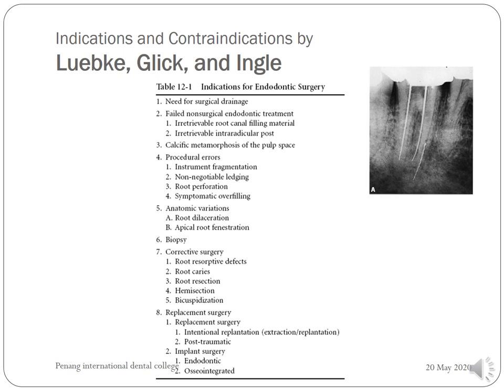Further indications include anatomical variations such as root dilaceration making root end filling literally impossible, apical root fenestration, root defects, and when suspecting a lesion — especially a small cyst — requiring biopsy. Corrective surgeries for resorptive defects, root caries, or badly damaged roots lead to root resection, hemisection, or bicuspidization. Post-traumatic procedures such as replantation of avulsed teeth are also included. Endodontic implants and osseointegrated implants will be excluded from this lecture.